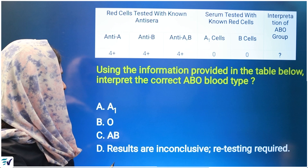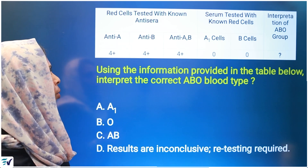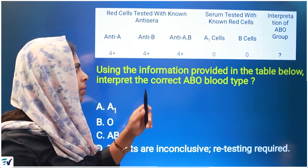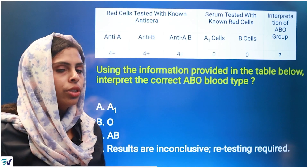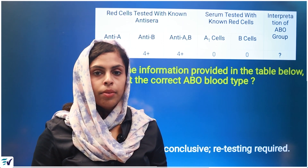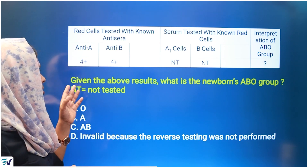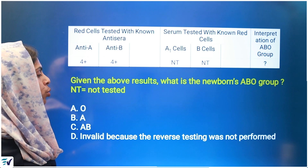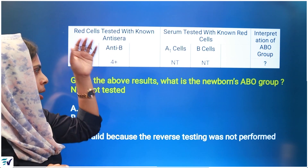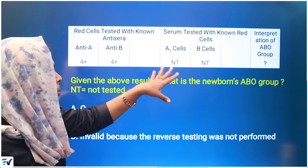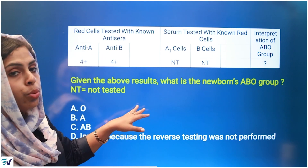Using the information in the table, interpret the correct ABO group: anti-A 4+, anti-B 4+, anti-AB 4+, with A1 cells and B cells showing no reaction — the answer is AB group. The next question: what is the ABO group of a newborn? In newborns, only forward grouping is performed with anti-A and anti-B reactions, since reverse grouping is not done. The ABO group is determined by forward typing only.